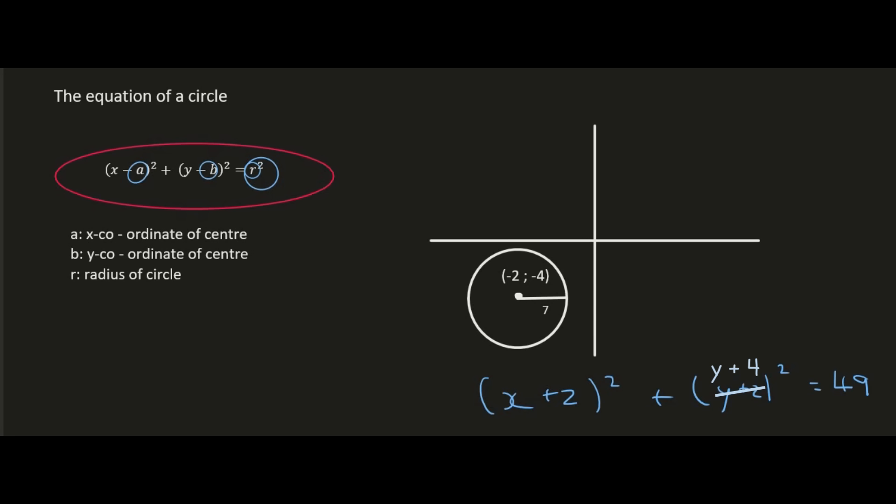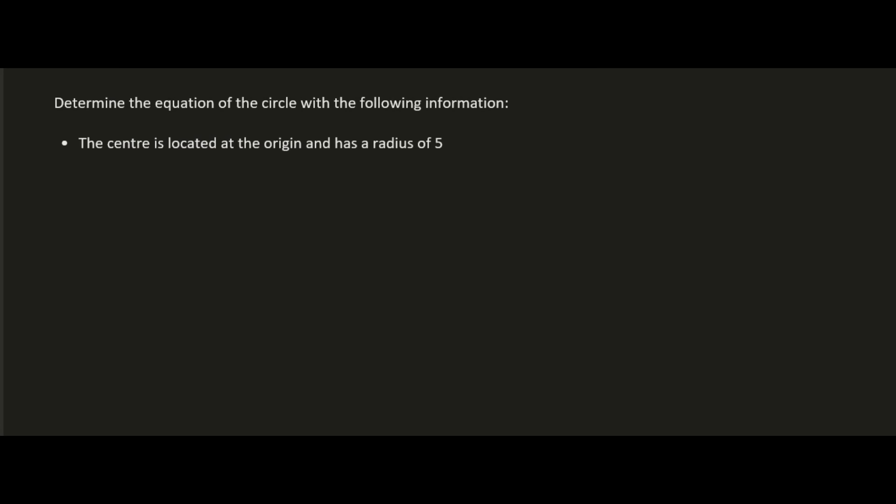Here we have to determine the equation of the circle with the following information: the center is located at the origin and the circle has a radius of 5. We could use the circle formula again, where this is x, this is y. The center is at (0, 0)—that's what we mean by the origin—so you could say minus 0 here and minus 0 here.